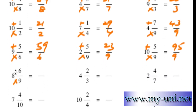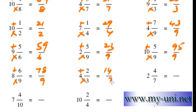9 times 8 is 72. 72 plus 6 is 78 over 9. 4 times 3 is 12. 12 plus 2 is 14 over 3. 2 times 7 is 14. 14 plus 4 is 18 over 7.